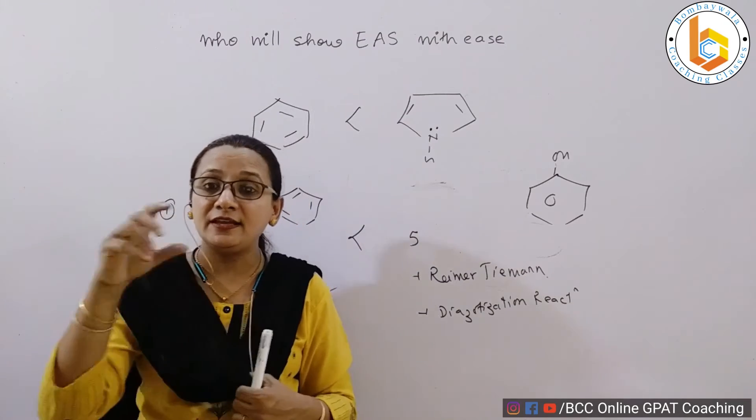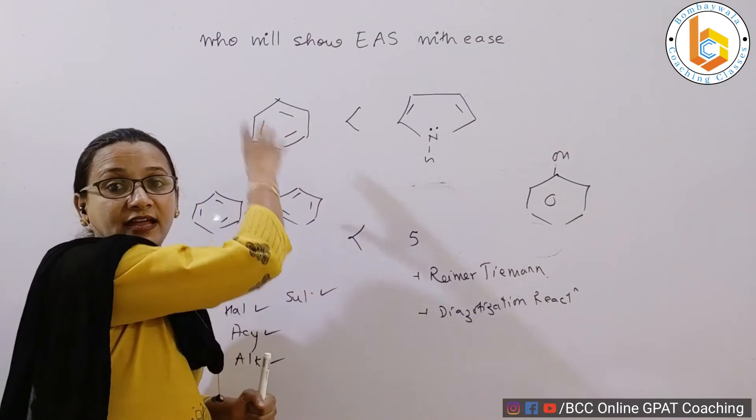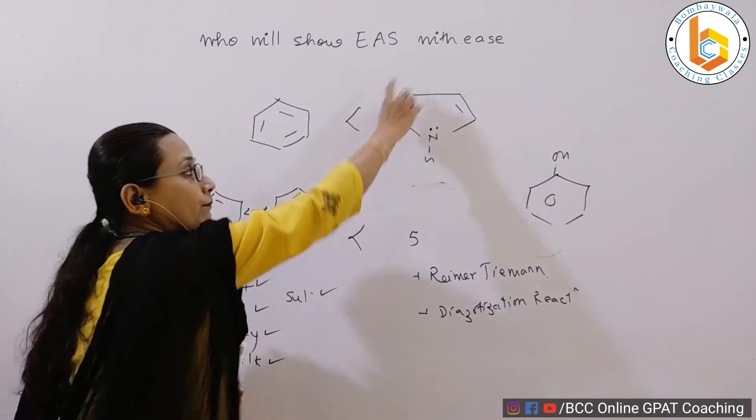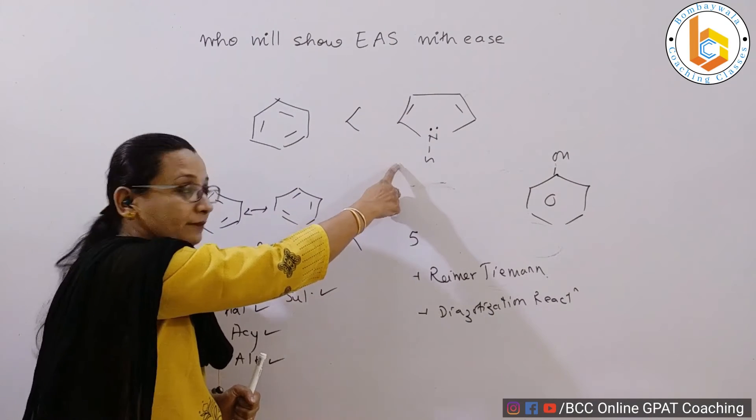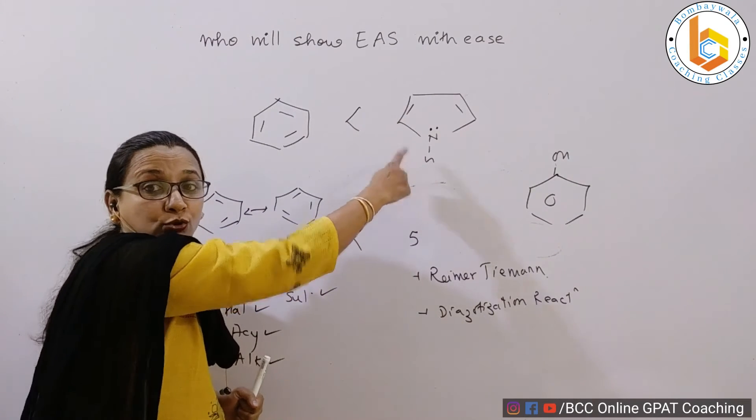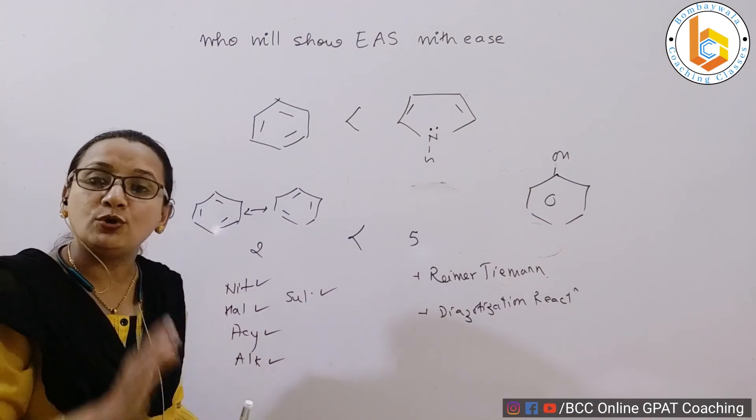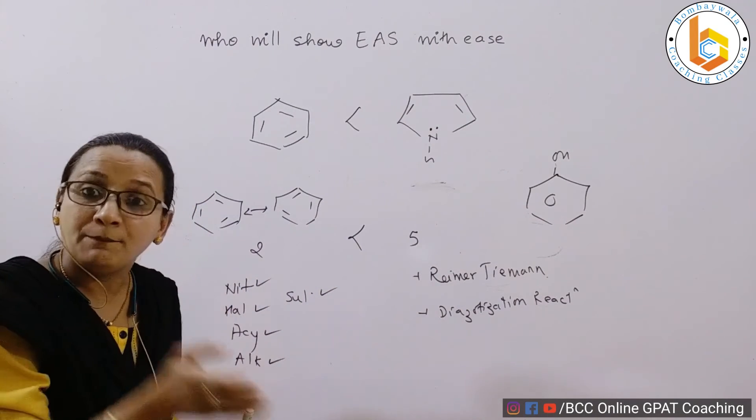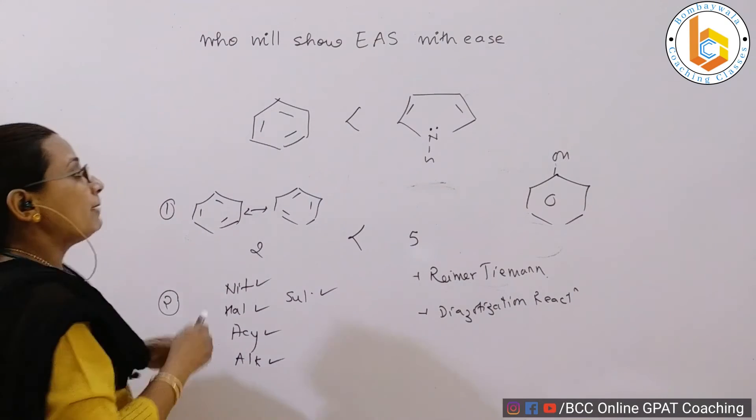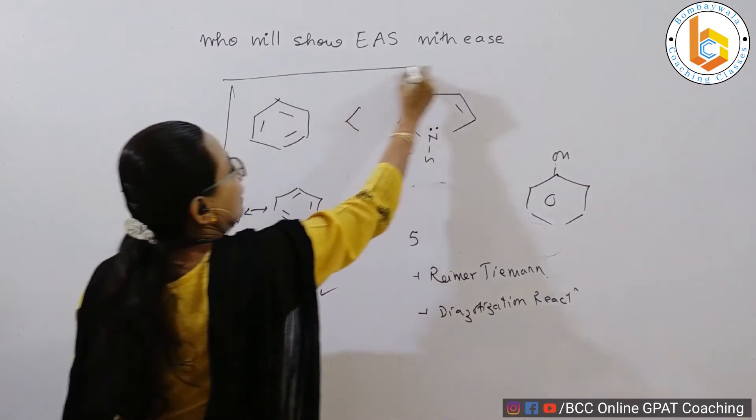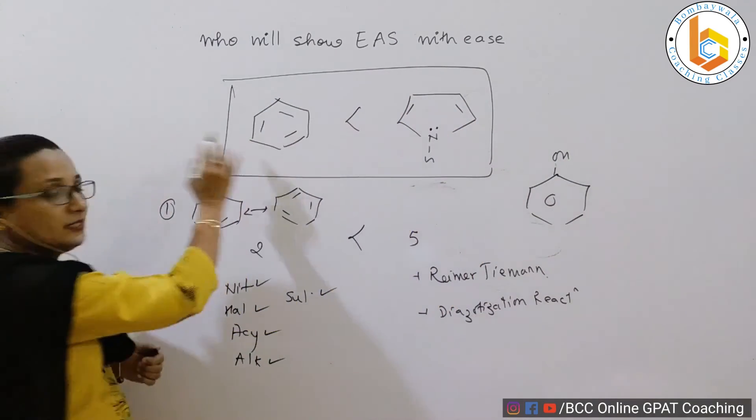So saying this, we are saying that yes, benzene is less reactive than pyrrole. Because more the number of resonating forms, more is the stability. One. Two, it can show those reactions also which benzene cannot show. It will show those reactions which benzene can show, plus it will show those reactions which benzene cannot show. Hence, pyrrole is having greater electrophilic aromatic substitution reactivity than benzene.